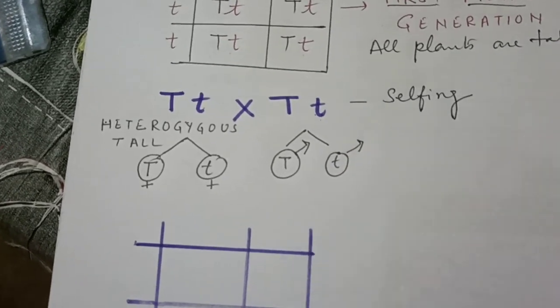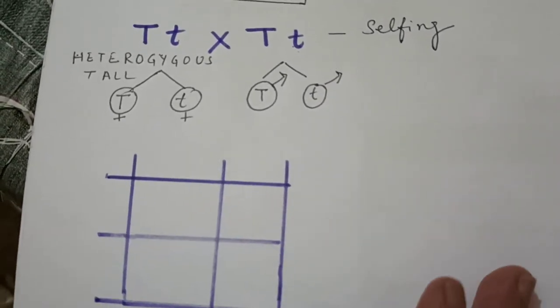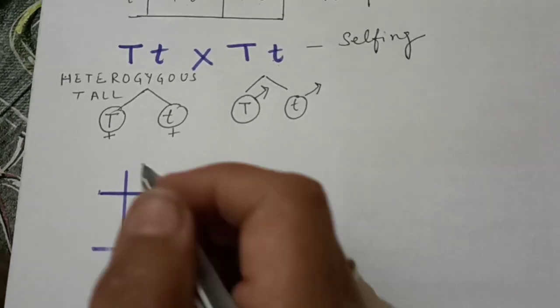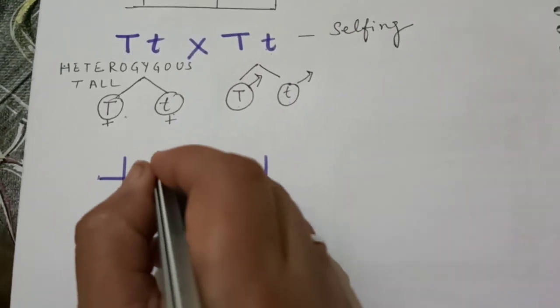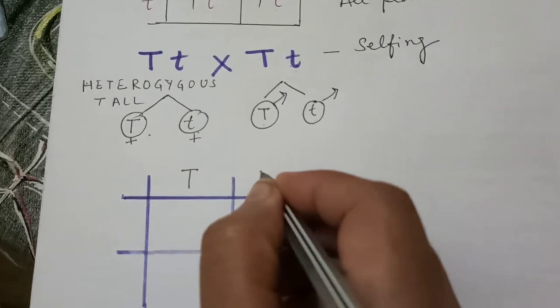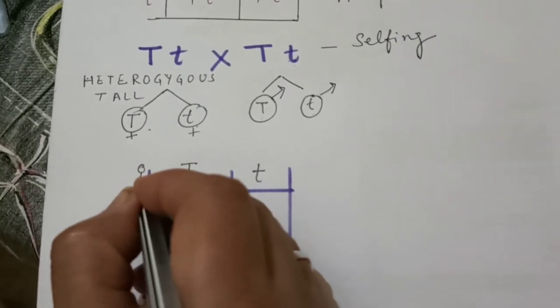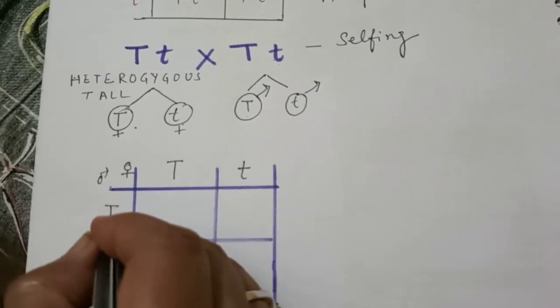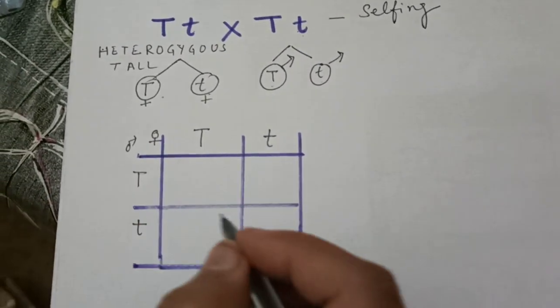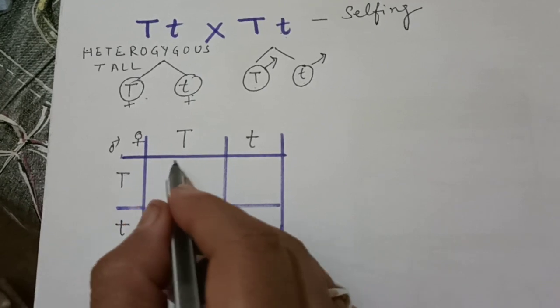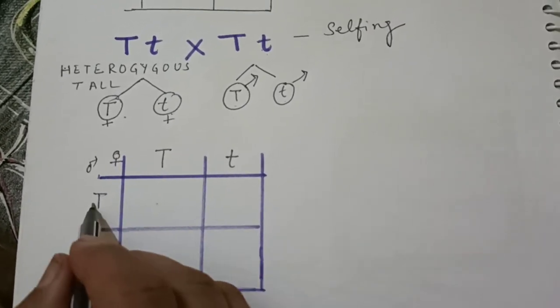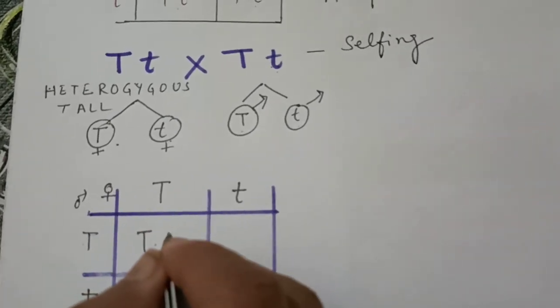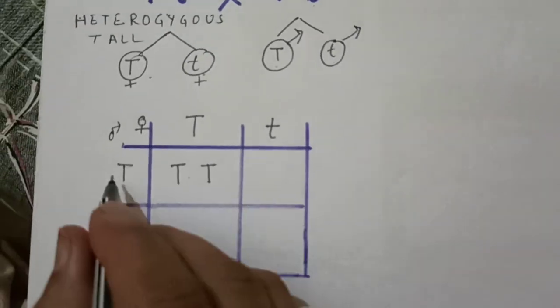Now going to write these gametes or the symbol of the gametes in this Punnett square. Capital T small t being as female in this vertical way, and of course capital T and small t in this vertical row.